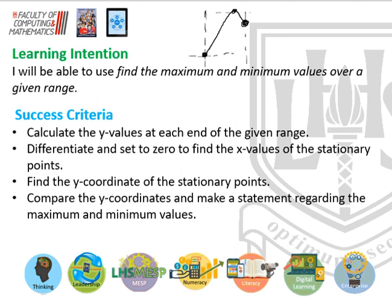So to find the maximum and minimum values over a given range, you have to check these values. Firstly, you have to calculate the values at each end of the given range. Then you have to find your stationary points, check the y values of those stationary points, and then compare the y coordinates and make a statement regarding the maximum and minimum values.